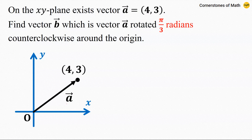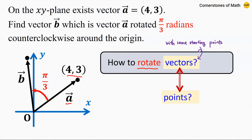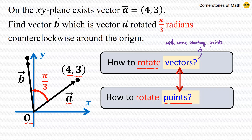On the xy plane exists vector a, whose coordinates are (4, 3). Find vector b, which is vector a rotated pi over 3 radians counterclockwise around the origin. The problem is essentially asking: do you know how to rotate vectors? Vectors starting at the same reference point — in this case the origin — can also be treated as points. Here I will show you three famous methods to rotate vectors or points in a plane. One method can be simpler than others depending on the problem, so it is definitely beneficial to remember them.